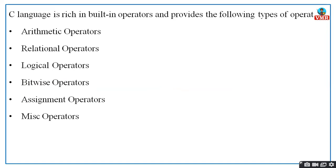C is rich in built-in operators and provides the following types: arithmetic operators, relational operators, logical operators, bitwise operators, assignment operators, and miscellaneous or conditional operators. We will see one operator after the other with a small description.